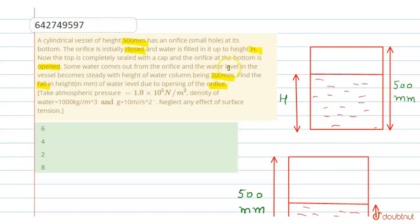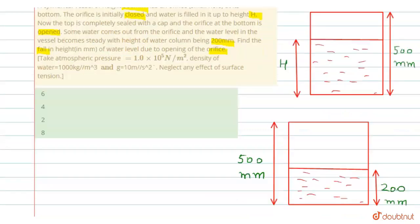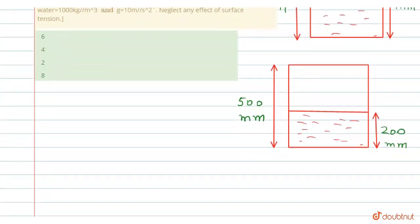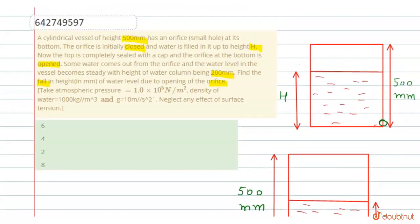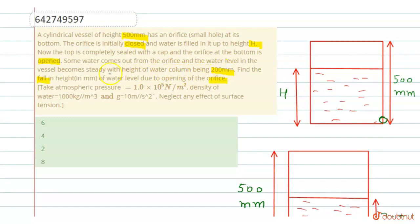So first of all we draw two diagrams in this case. Here is a small hole and here is also a small hole. Now we have to find the fall in height of the water level due to opening of the orifice. First of all there are two diagrams.